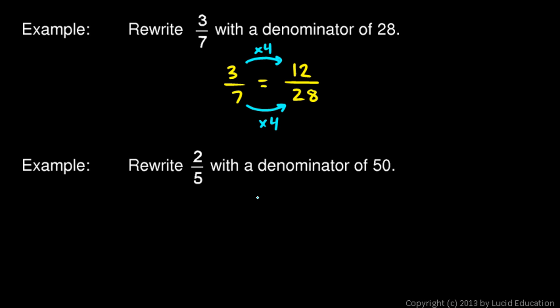Another example, rewrite 2 fifths with a denominator of 50. So we're going to write 2 fifths equals some fraction with a denominator of 50. And in my mind, I think, and you can actually write this like I'm doing right now if you want to, but in your mind you think, 5 times what gives you 50? Well, 5 times 10 gives me 50. So if I multiply the denominator by 10, I need to multiply the numerator by 10. 2 times 10 is 20. So 2 fifths is the same as 20 fiftieths. Those are equivalent fractions. And this one has a denominator of 50.